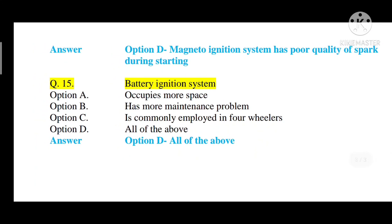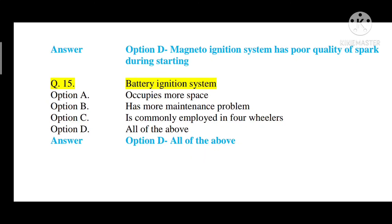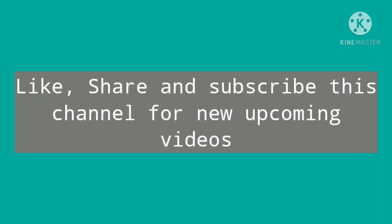Question number fifteen: battery ignition system — option A: occupies more space, option B: has more maintenance problem, option C: is commonly employed in four-wheelers, option D: all of the above. The correct answer is option D — all of the above. It occupies more space than magneto ignition system, it has more maintenance problems due to the different components used, and it is commonly employed in four-wheelers.